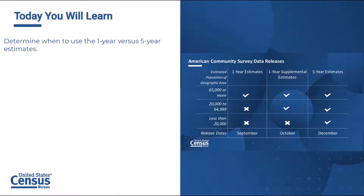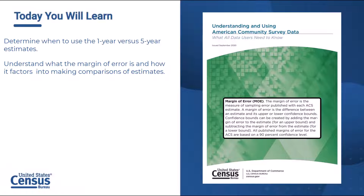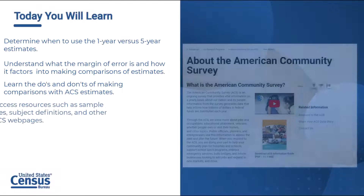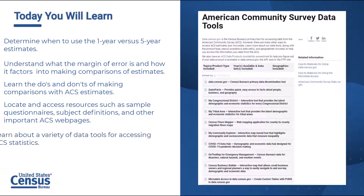After today's video, you will be able to determine when to use the one-year versus five-year estimates, determine what the margin of error is and how it factors into making comparisons of estimates, learn the do's and don'ts of making comparisons with ACS estimates, locate and access resources such as sample questionnaires, subject definitions, and other important ACS webpages, and learn about a variety of data tools for accessing ACS statistics.